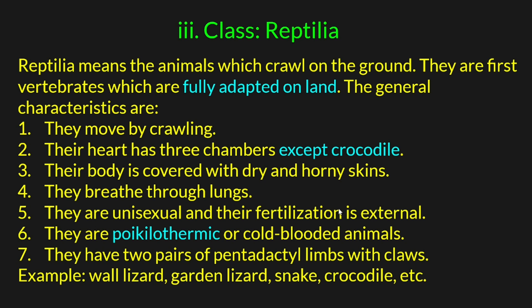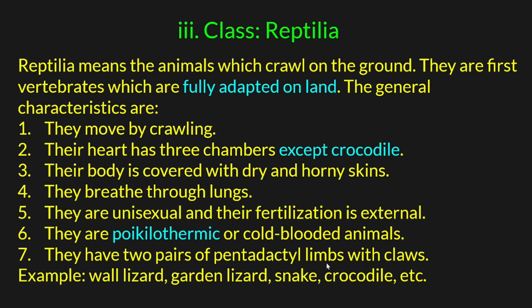Their fertilization is internal. They are poikilothermic or cold-blooded animals. They have 2 pairs of pentadactyl limbs with claws. Examples include wild lizard, garden lizard, snake, and crocodile.